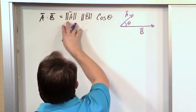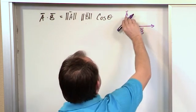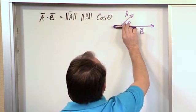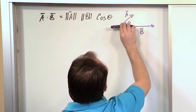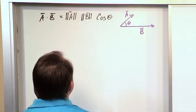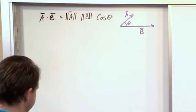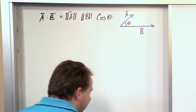And so when we take A, B, cosine theta, we're taking the A vector, we're projecting it in the direction of B, and then we're multiplying that length, that projected length, times B. That's what this concept of a dot product is really doing.